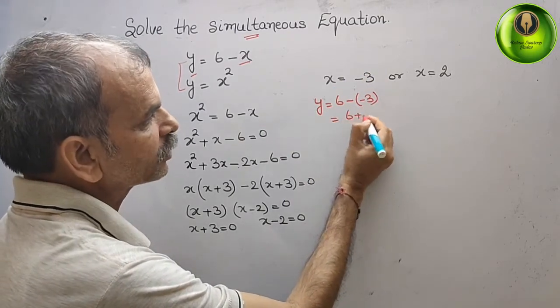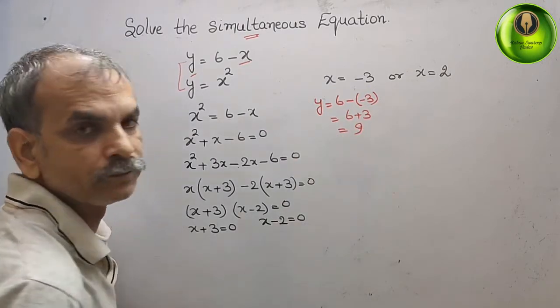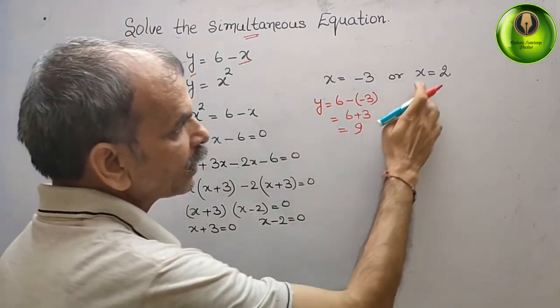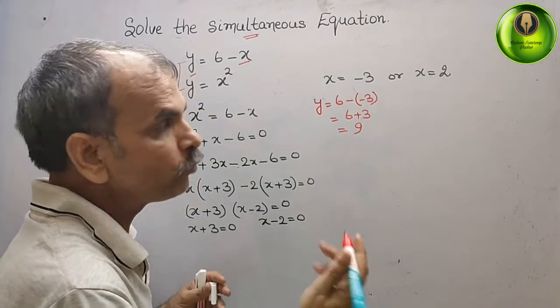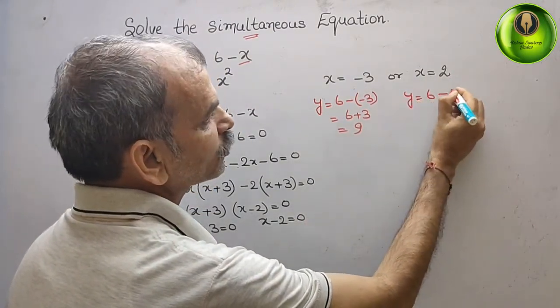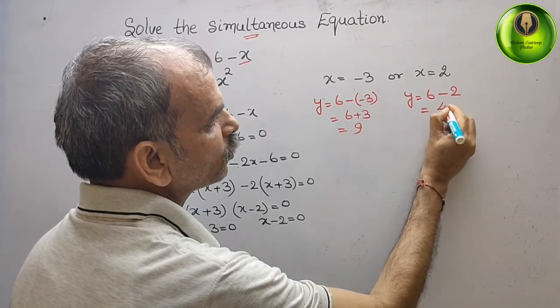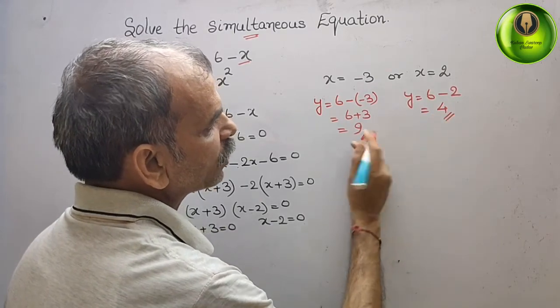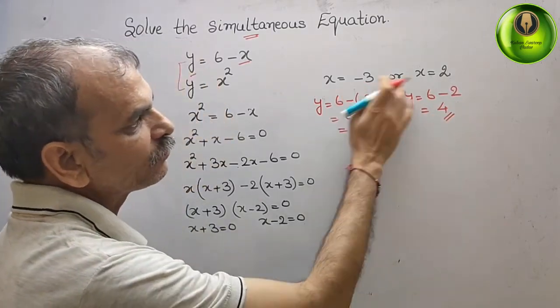And here if you take x = 2, you will get y = 6 - 2 that is equal to 4. So these are the two values for y and these values for x.